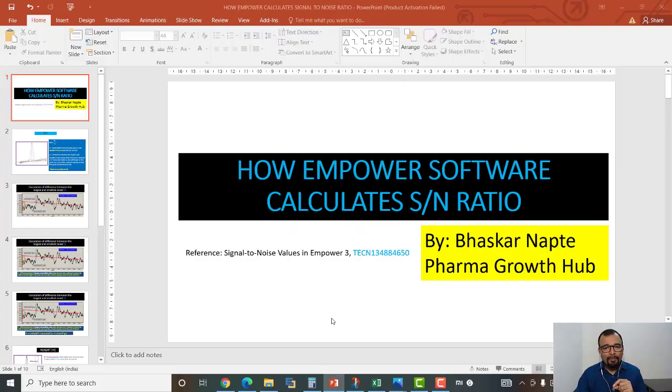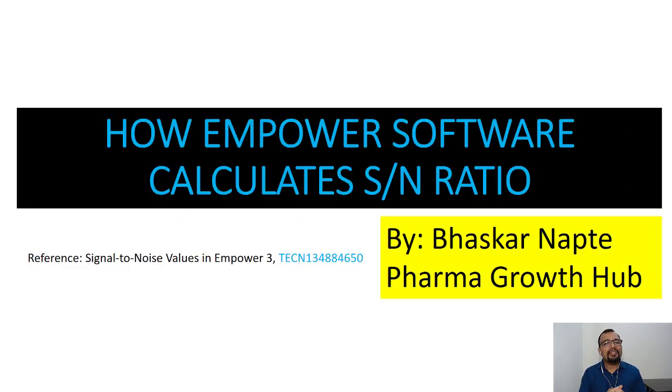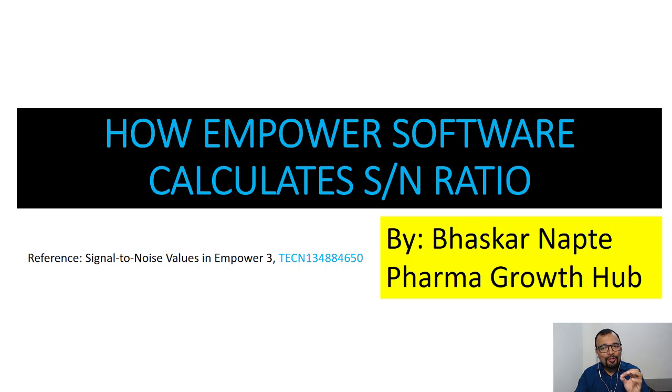I am going to explain the calculation of signal to noise with the help of Empower software — how Empower software calculates this signal to noise ratio — and it can be different from Chromeleon or another application software. I am also going to give the reference from which I am speaking. Here is the reference on your screen: it is the 'Signal to Noise Value in Empower 3', a document published by Waters. You can also go and check the details provided in this document. So let us begin with the presentation on how Empower software calculates the signal to noise ratio.